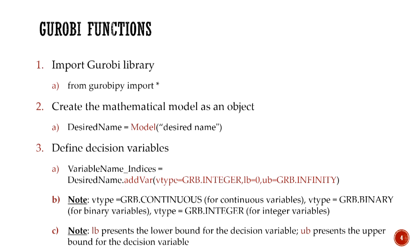A couple of notes: GRB.CONTINUOUS can be used for continuous variables, meaning fractional values are accepted. GRB.BINARY is used for binary variables — 0 or 1 decisions. GRB.INTEGER is used for integer variables. LB is the lower bound and UB is the upper bound for a decision variable. The upper bound is infinity here, but it can also be a specific number, such as when the decision variable should be less than 10, 20, or some threshold.